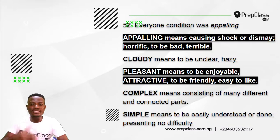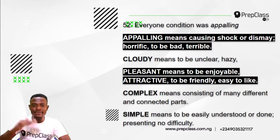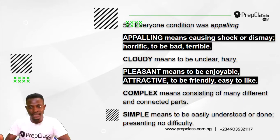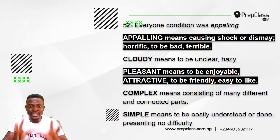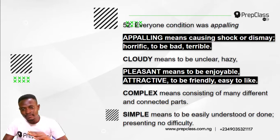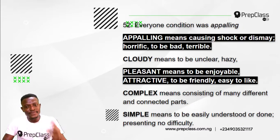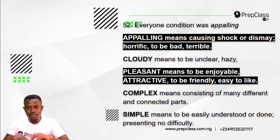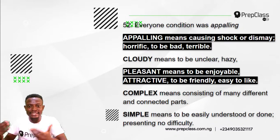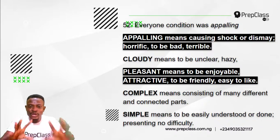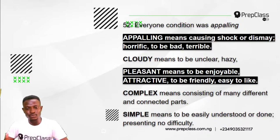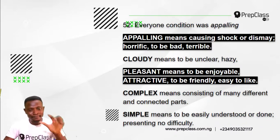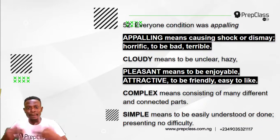Now 'appalling' means causing shock or dismay — to be horrific, bad and terrible. It is not 'cloudy.' The opposite meaning to 'appalling' is 'pleasant,' which means to be enjoyable, attractive, friendly, and easy to like. It is not 'complex,' which means consisting of many different and connected parts. It is not 'simple,' which means easily understood or done, presenting no difficulty.